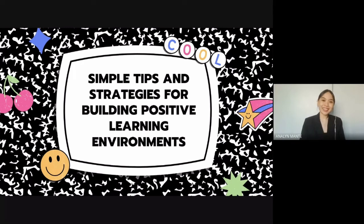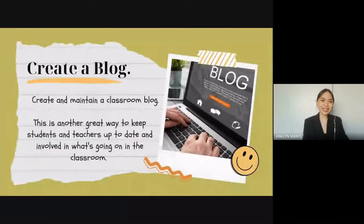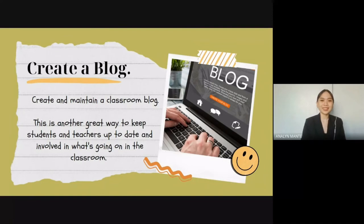Thank you, Teacher Johanna. To add to what Teacher Johanna discussed, I will also share some other simple tips and strategies for creating a positive learning environment. First, create and maintain a classroom blog. Creating a classroom blog is a great way to keep students and teachers up to date and involved in what's going on in the classroom. Teachers can post class announcements, prompts, resources, and upcoming projects and assignments. It's also a good space for students to collaborate by sharing ideas and providing feedback on each other's work.